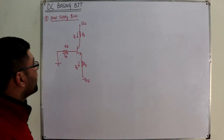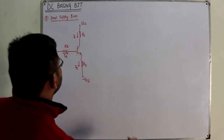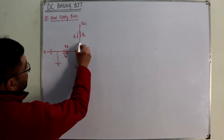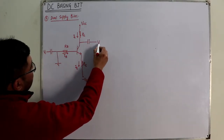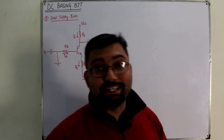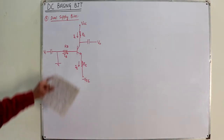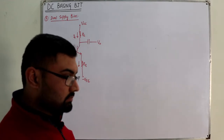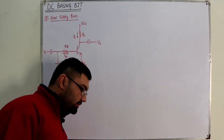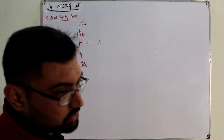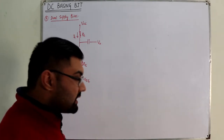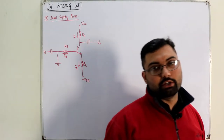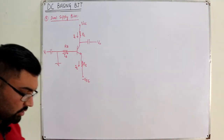This is the common emitter configuration - we are back to common emitter where the input is applied at the base and output is taken at the collector. You can have your capacitors here as well, but for the understanding purpose we are only studying the DC analysis. Dual supply bias has an important application: we can get more voltage swing. We will see that in the AC analysis. When the peak voltage is reached, the transistor has a chance to get out of the active region.